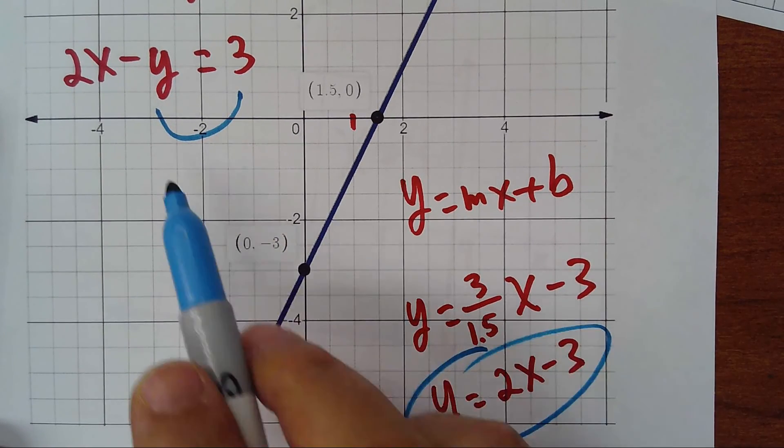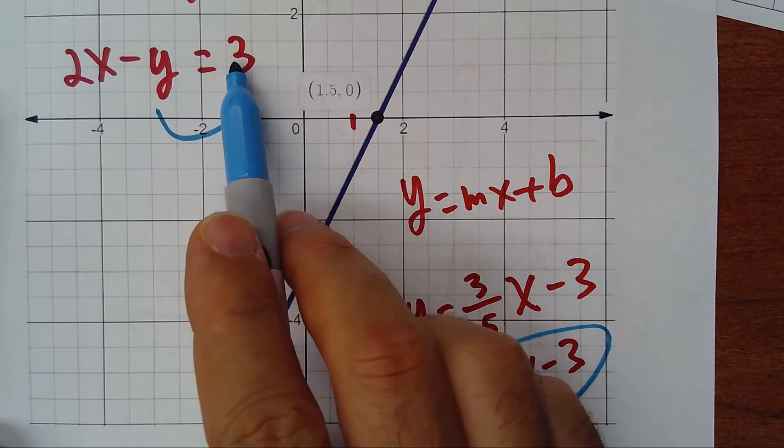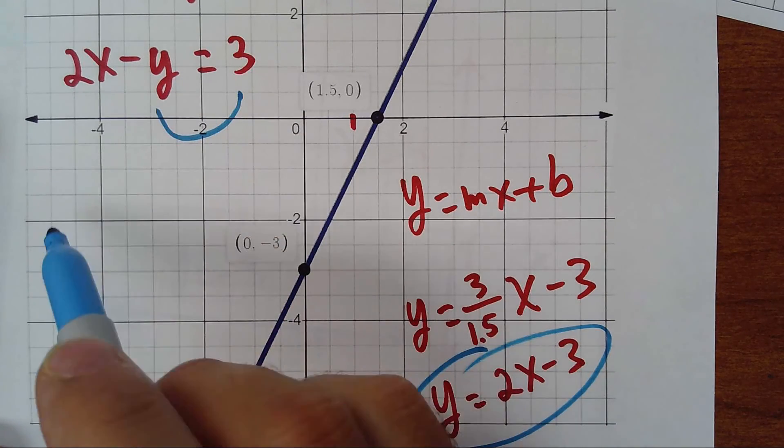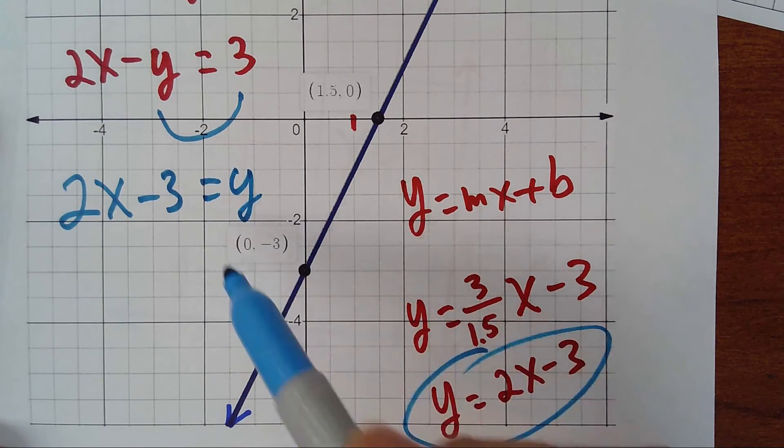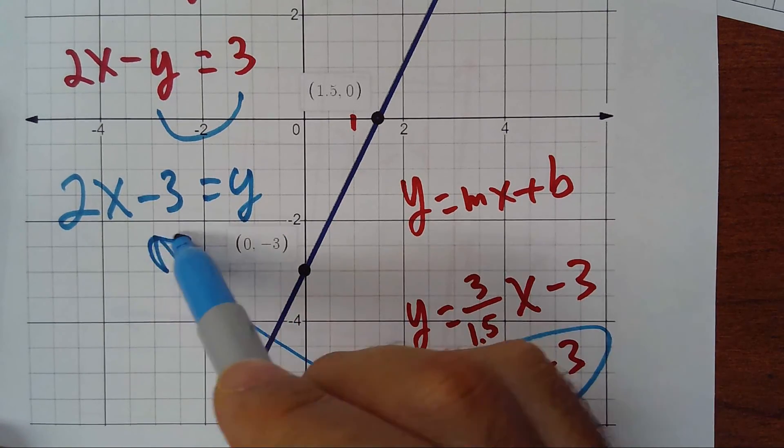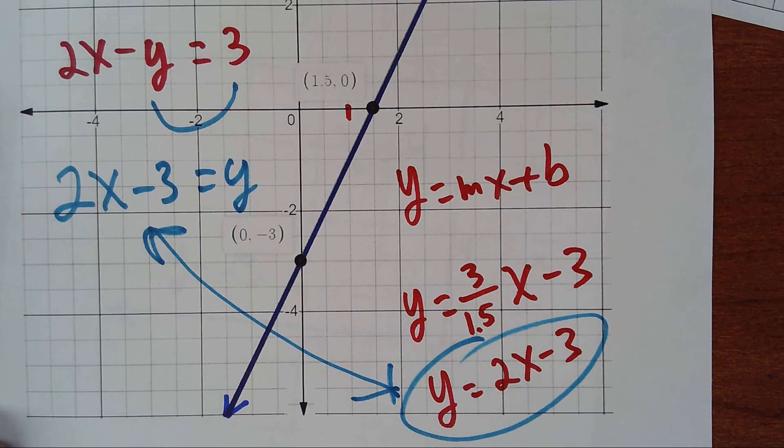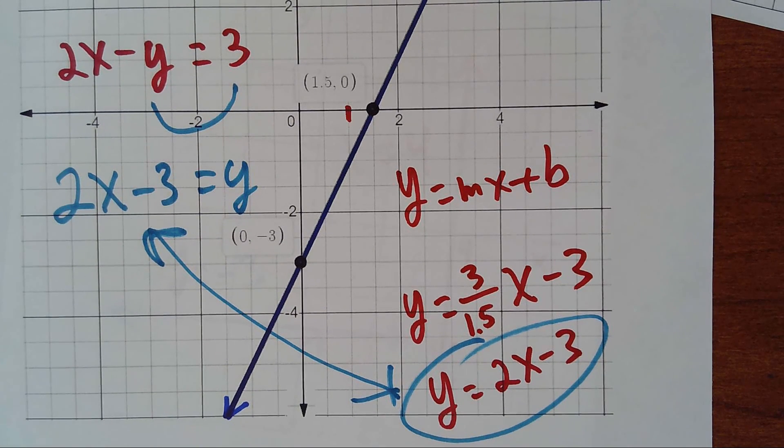Basically, if I switch those two terms, I will have this same equation. So you put the y here positive and the 3 here positive, it will be here negative, and I will have 2x - 3 = y. So those two match each other; it's the same equation. Thank you for watching.